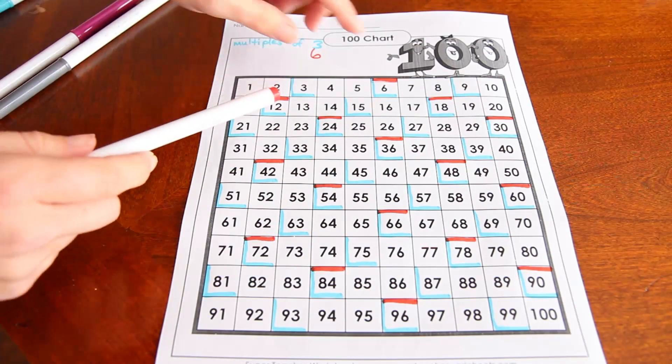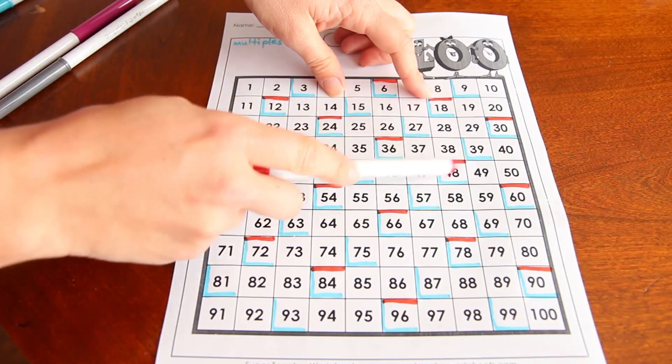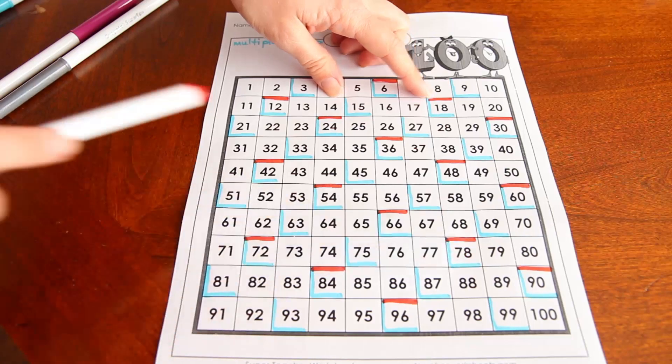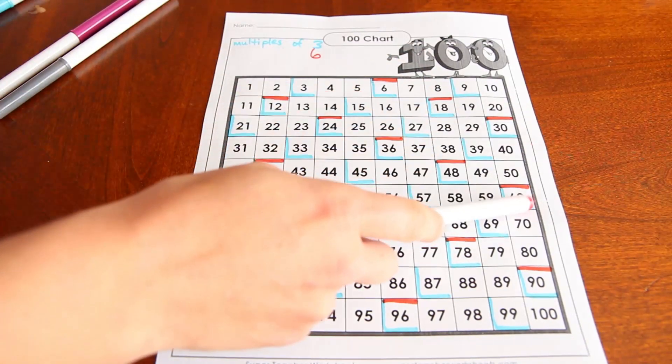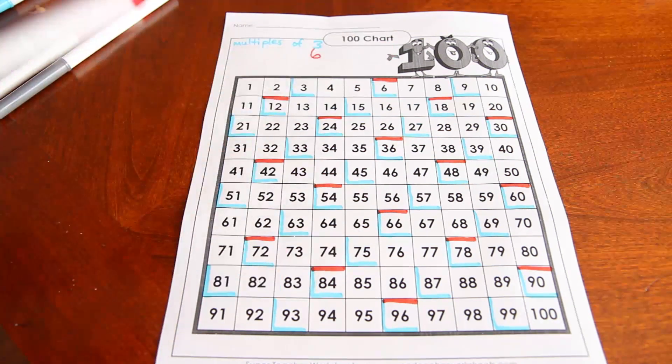And then with this pattern, you can see that each time it jumps a whole 30. 30 to 60 to 90 for it to be in the same column.